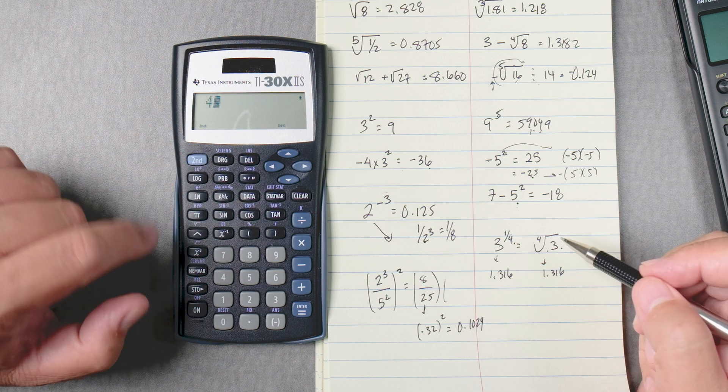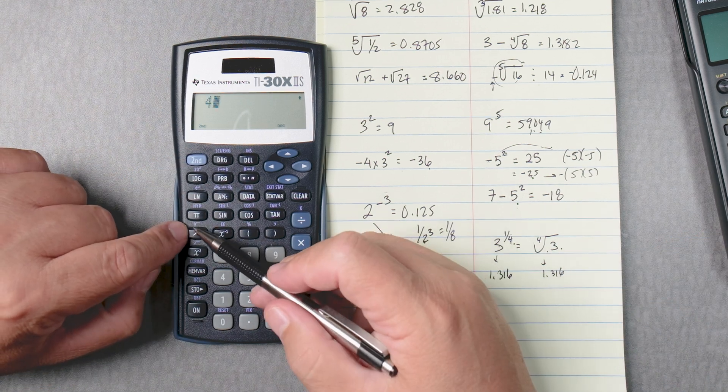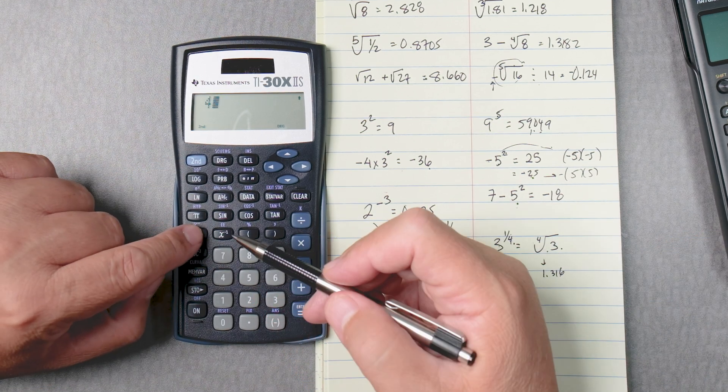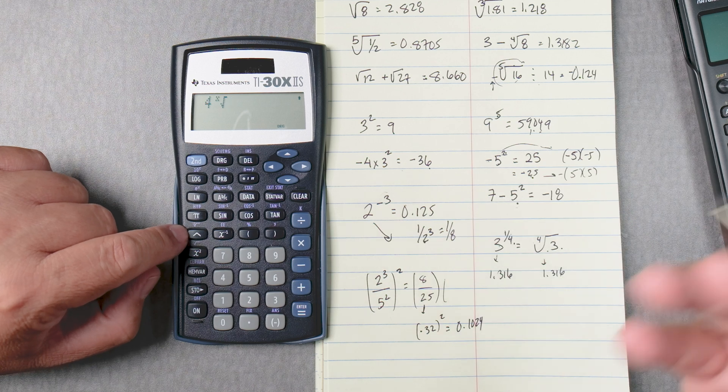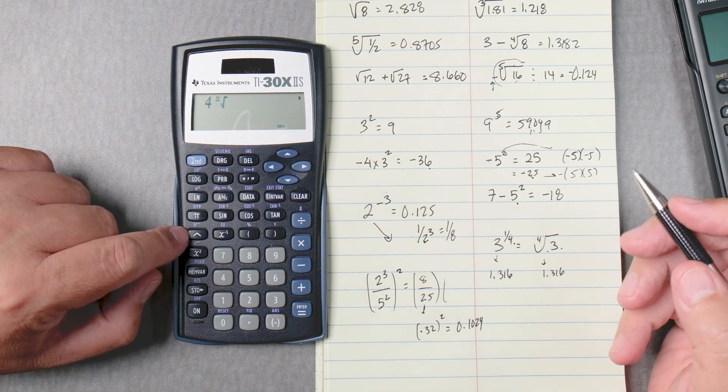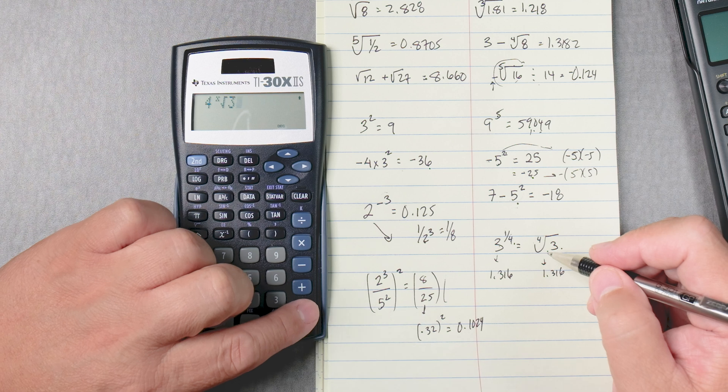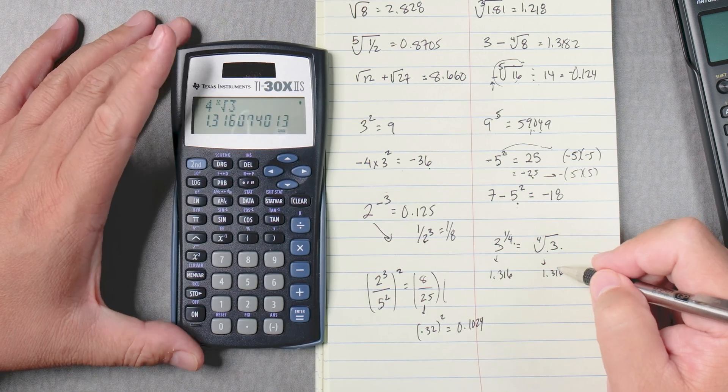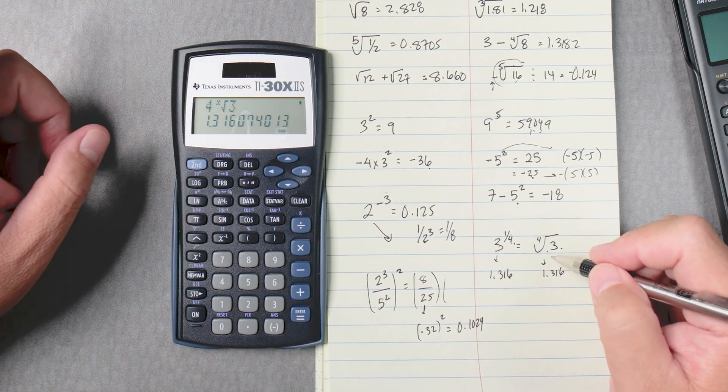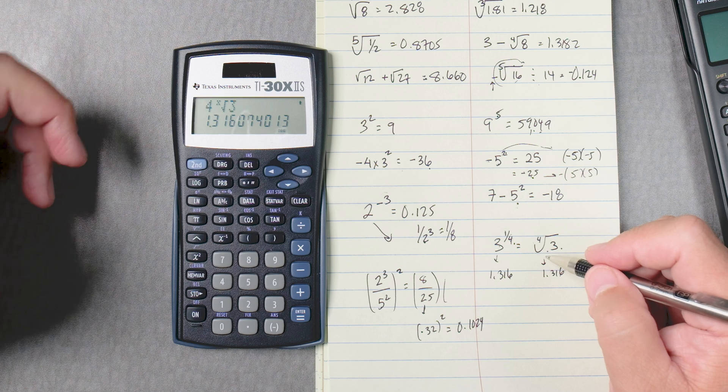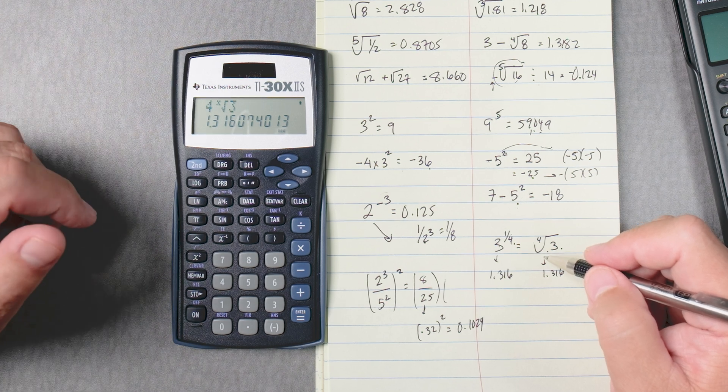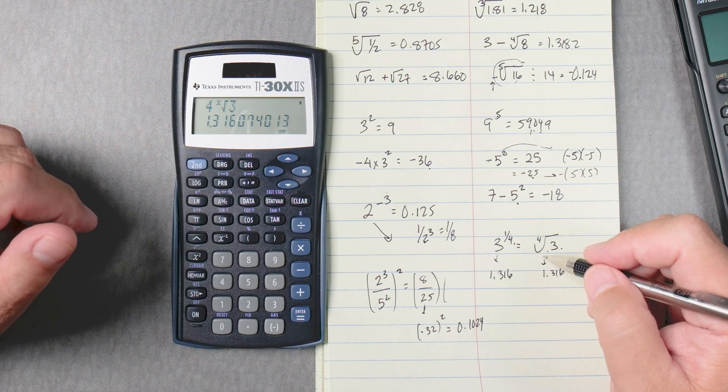Or you can say 4, second, right? X to the x square root, right? The nth root, which in this case, the 4th root, and then you type in 3 equals. It gives you the same answer, okay? If you like this so far, please give it a thumbs up, please tell your teacher, please tell your friend.